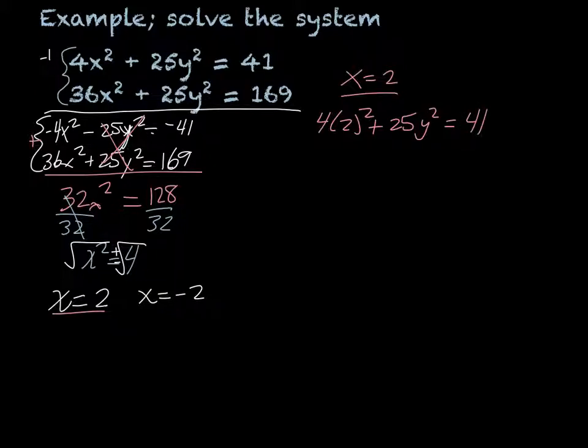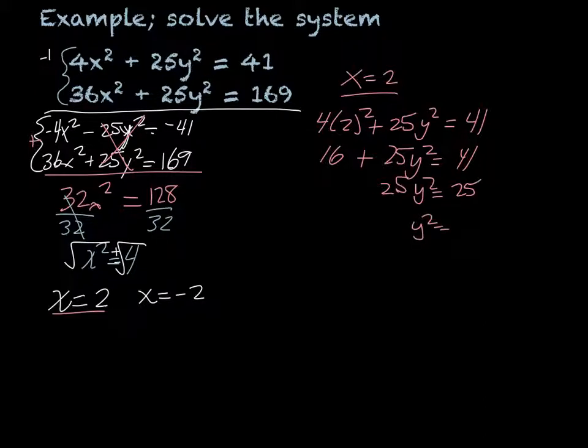So that would be 2² is 4, 4 times 4 is 16, plus 25 times y² equals 41. So we subtract, and we get 25y² equals 25. Then we divide, and y² equals 1.